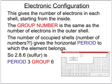As an example, sulphur has the configuration 2,8,6. From that we can tell that sulphur is in group 6 because the number of outer electrons is 6, and because there are 3 shells we know that sulphur is in the third period. Here is sulphur on the third period and the sixth group.